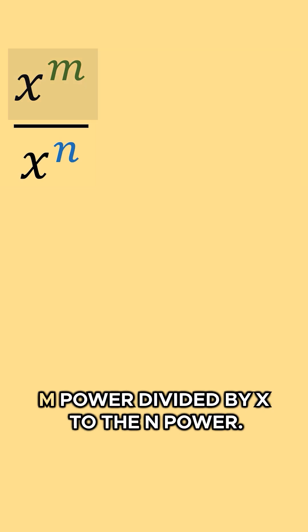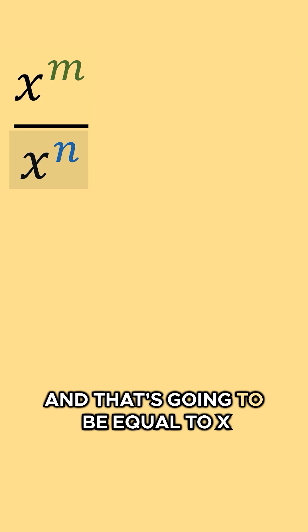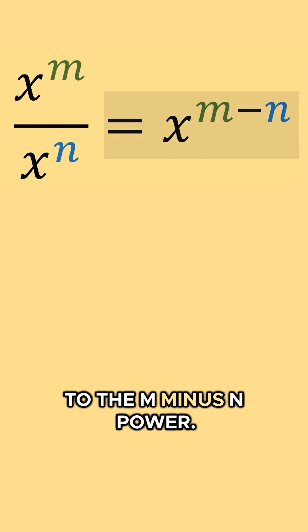And right here, we have x to the m power divided by x to the n power, and that's going to be equal to x to the m minus n power.